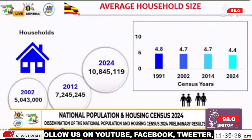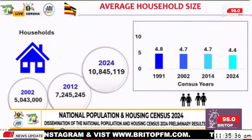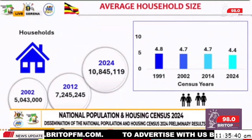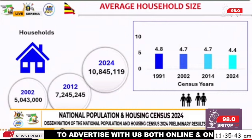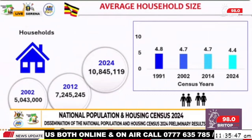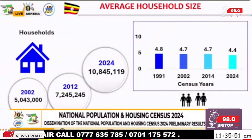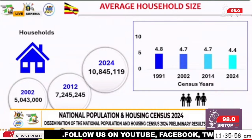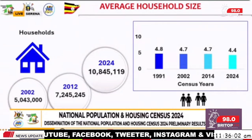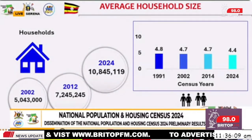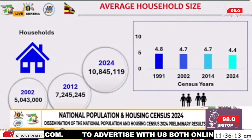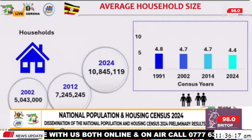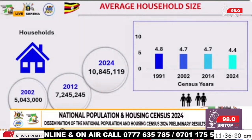The average household size is now 4.4 persons, down from 4.7 in the previous census. You can see the number of households we have now compared to 2014, not 2012. The growth rate is 2.9%, moved down from 3%. Demographers will tell us this is showing the demographic transition we are undergoing, and this is one indicator of the economic development progress that we are making.